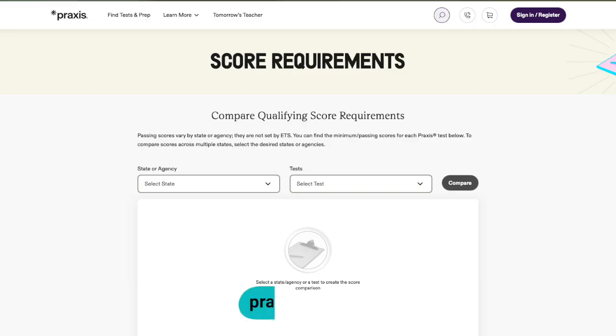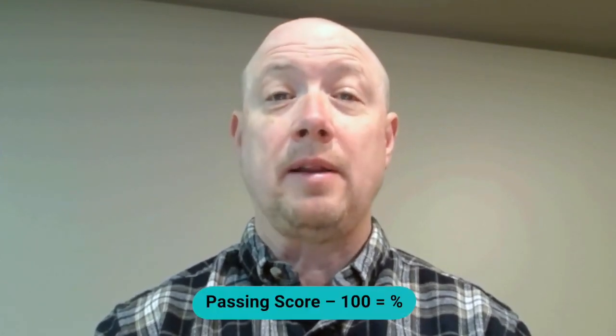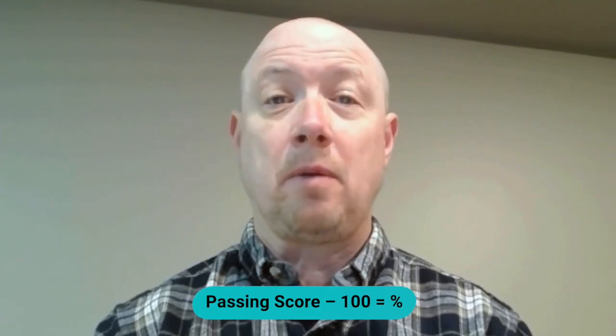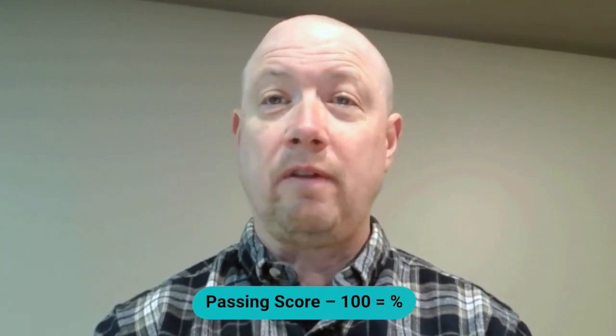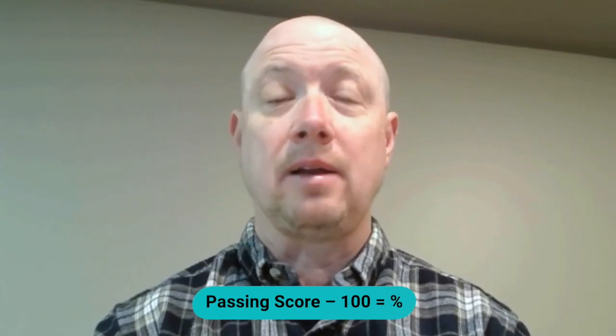Now let's talk scoring. The Praxis 5003 is scored on a scale of 100 to 200, and a passing score is generally 157. However, every state has its own score requirements, so always check your state's guidelines on praxis.ets.org. A good rule of thumb is to take your state's passing score, subtract 100, and treat that resulting number as a percent. That means if your passing score requirement is 157, you can roughly assume you need to get at least 57% of the questions correct in order to pass.